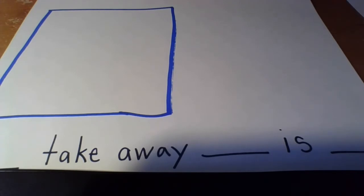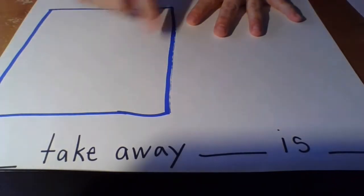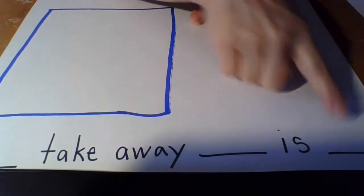To work through this idea of subtraction with your children this week, you're going to want to make a work mat that looks like this: a box, this number, and the sentence at the bottom.